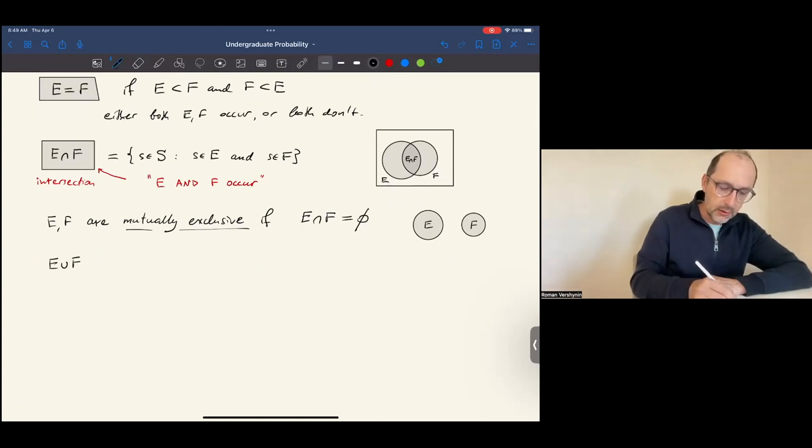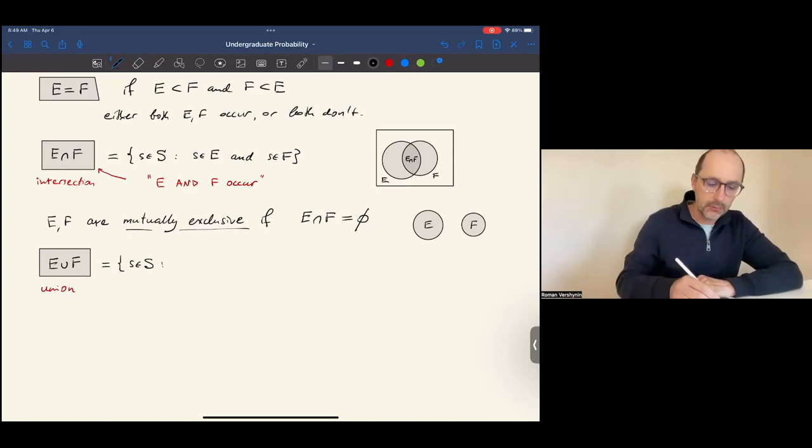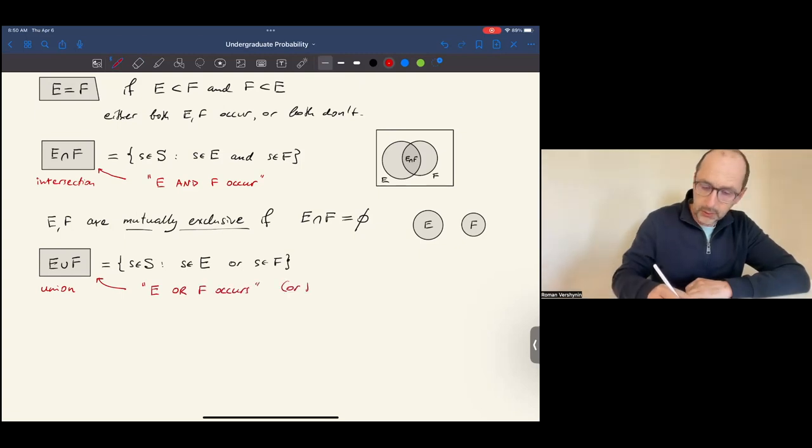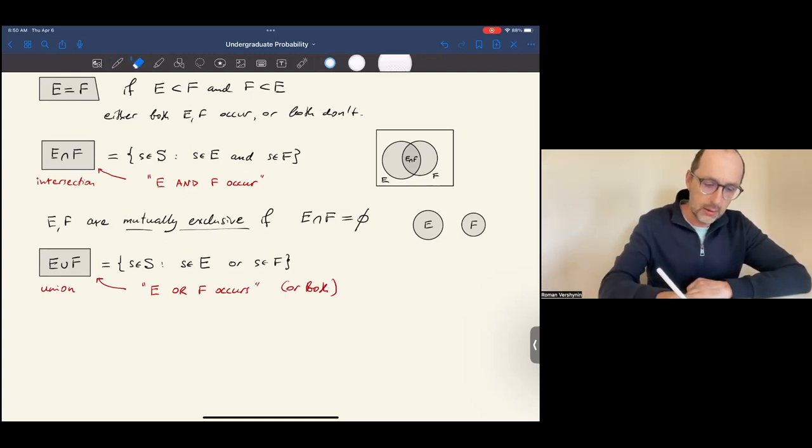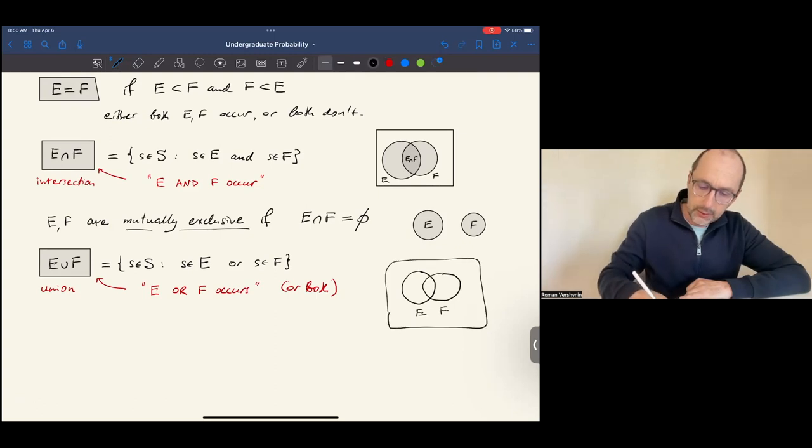The union of the two events E and F consists of all outcomes that are either in E or in F. We say in this case that E or F occurs, or both occur. This is a non-exclusive or. The Venn diagram for these two sets looks like this. This is E and this is F. And the union is everything here.